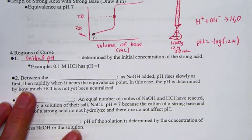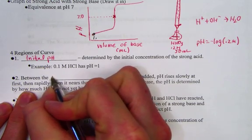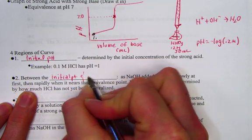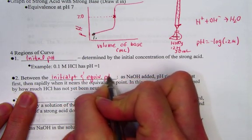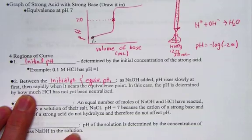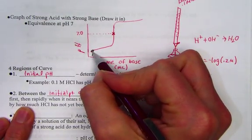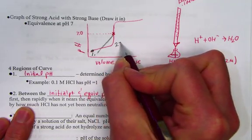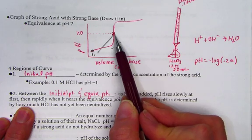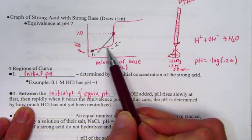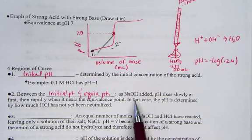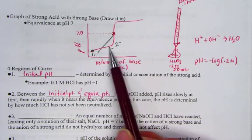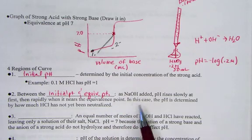Let's consider in the second region where we're between the initial point and the equivalence point. So thinking about that on the graph, point 1, no base has been added, but point 2 would be the region, this area, we have yet to reach the equivalence point, but we've begun to add acid. So when we begin to add acid, the pH rises slowly at first, that would be this region, then rapidly when it nears the equivalence point.